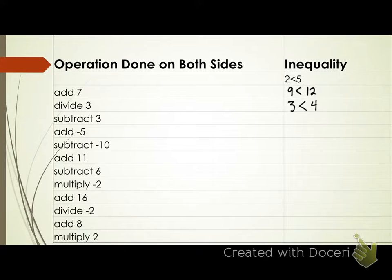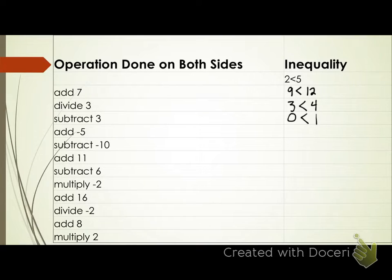Subtract three from both sides. What's three minus three? Zero. Four minus three? One. Inequality symbol? Less than. Zero is less than one. Everyone still with me?